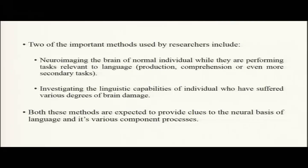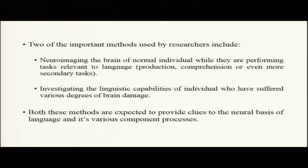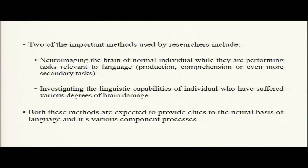There are two very important methods that scientists use. One is neural imaging of the normal individual's brain — you get individuals into the lab, ask them to perform particular language functions, and check their brain activity: when production was happening, these are the areas that lit up; when comprehension was given, these are the areas that lit up.